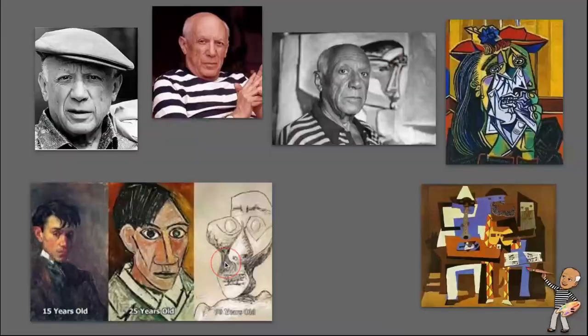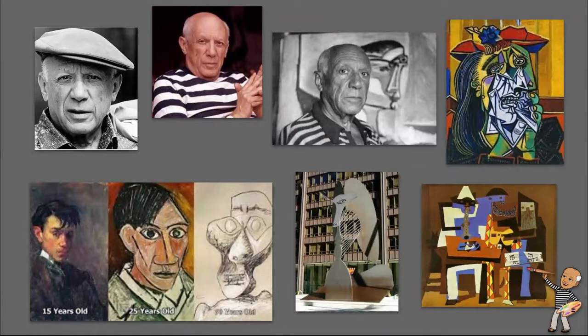A little bit about Pablo Picasso: he was born in 1881 and he died in 1973 at 92 years old. He was a Spanish painter and sculptor, and he's most famous for developing cubism alongside his friend and colleague Georges Braque.